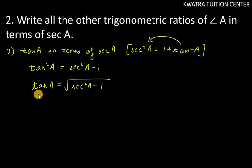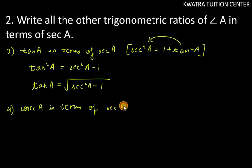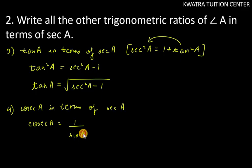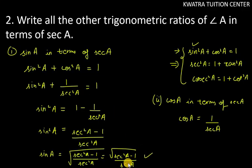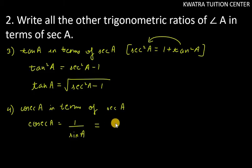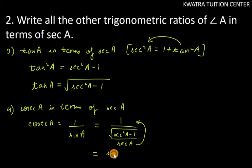The fourth part is cosec A in terms of sec A. Since cosec A = 1/sin A, and we already found sin A = √(sec²A − 1)/sec A, we get cosec A = 1 ÷ [√(sec²A − 1)/sec A] = sec A / √(sec²A − 1).